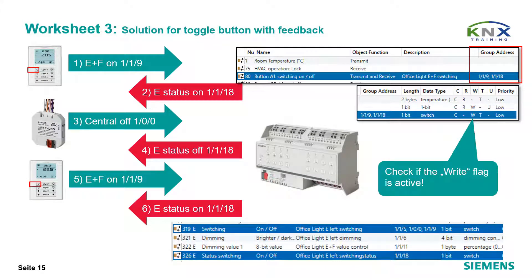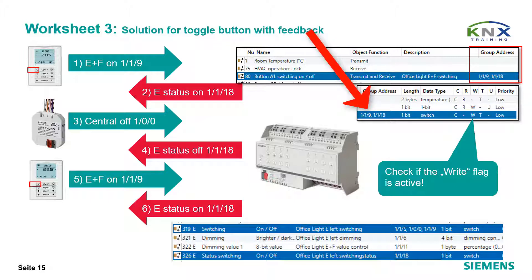Solution for toggle button with feedback. A toggle button will always send the inverted status of its output object for switching. But if you link this object just to one group address, the button will not receive changes from the actuator if that actuator is controlled by further group addresses. The result is: if you turn the light on by the toggle button but off by the push button interface for central off, the next operation of the toggle button would also send off and nothing would happen, as the light is already off. The solution is to link the switching object of the push button also to a status address of the controlled actuator channel. Make sure that in this case the status telegram finds an active write flag in this object, so that the object value can be overwritten or simply updated.